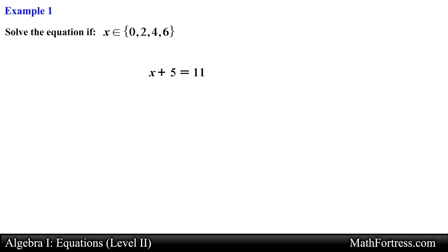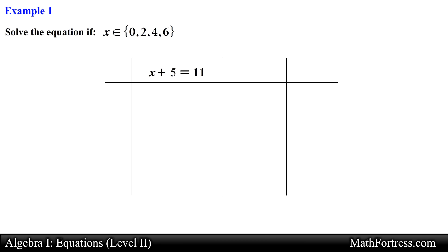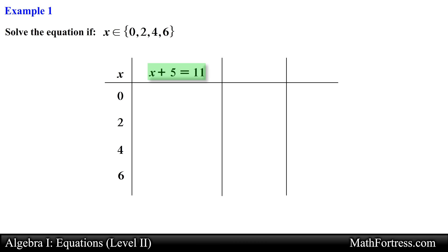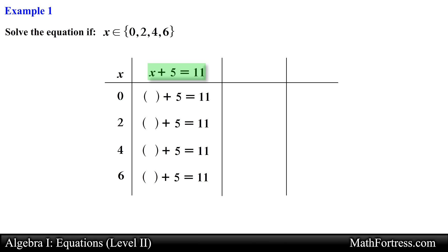Like in the previous video, let's set up a table as follows. The first column will contain the elements of the domain — in this case 0, 2, 4, and 6. The second column is where we substitute the variable of the equation with its respective element. The third column will contain the simplified equation after substituting the elements. And lastly, the final column will keep track of whether the statement obtained is true or false.